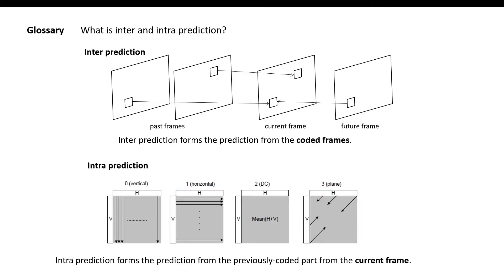What do inter-prediction and intra-prediction mean? Inter-prediction forms the prediction from the coded frame, and it is used by P-frame and B-frame. Intra-prediction forms the prediction from the previously coded part of the current frame.